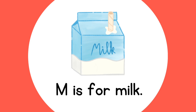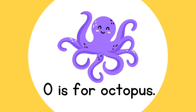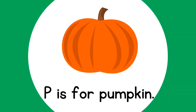M is for Milk. N is for Ninja. O is for Octopus. P is for Pumpkin.